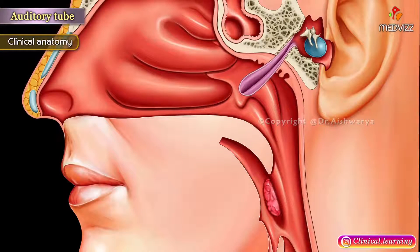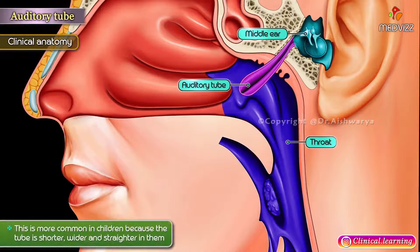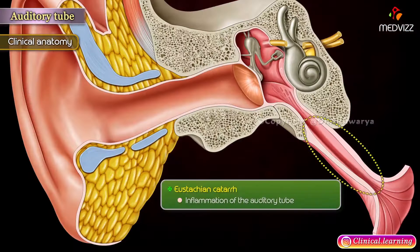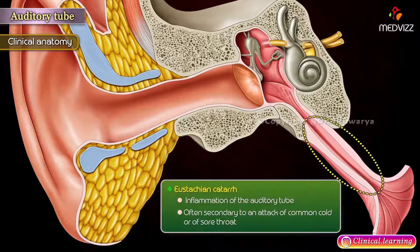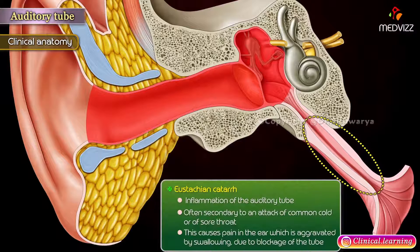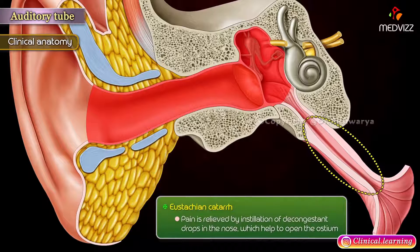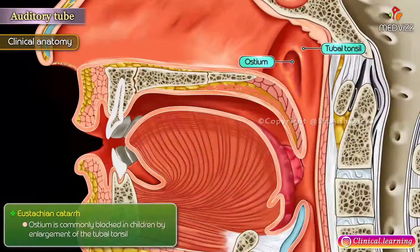Clinical anatomy: Infections may pass from the throat to the middle ear through the auditory tube. This is more common in children because the tube is shorter, wider, and more straight in them. Inflammation of the auditory tube is often secondary to an attack of the common cold or a sore throat, causing pain in the ear which is aggravated by swallowing due to blockage of the tube. Pain is relieved by installation of decongestant drops in the nose, which help to open the ostium. The ostium is commonly blocked in children by enlargement of the tubal tonsil.